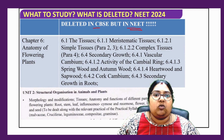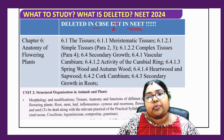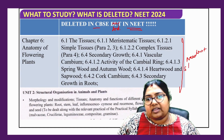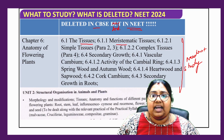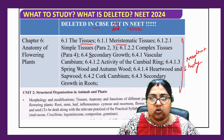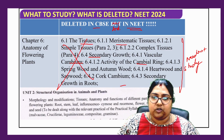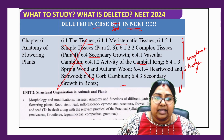Some topics are deleted in both CBSE and NEET, so you need not study them. These include tissues — meristematic tissues — and secondary growth: vascular cambium, cambial ring, and all related content. This is no longer required for NEET or CBSE.